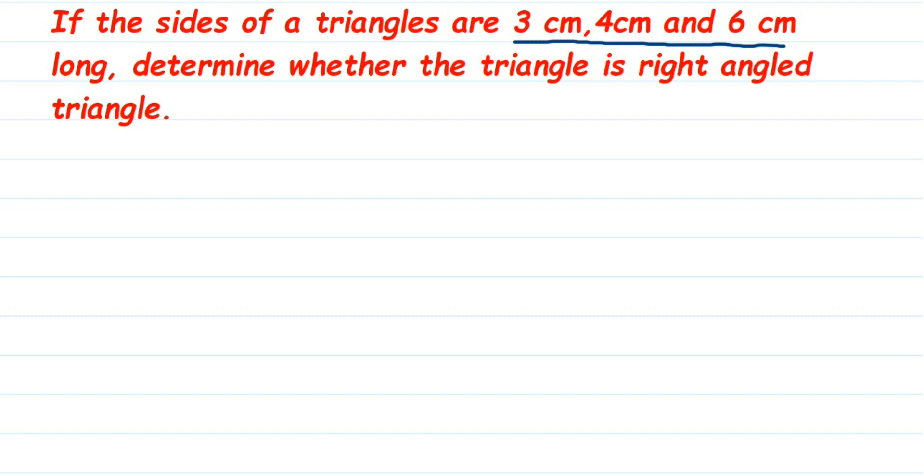I hope you all remember the Pythagoras theorem. Pythagoras theorem is famous for the right angle triangle. We are going to use Pythagoras theorem which states that hypotenuse square, HY stands for hypotenuse, is equal to base square, B stands for base, plus height square. H here is for the height.